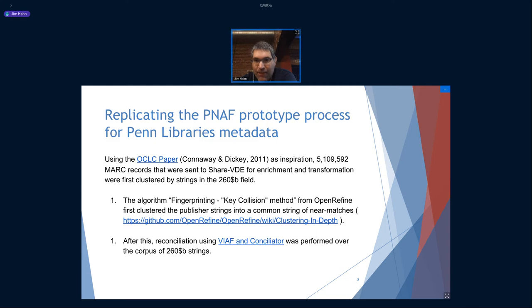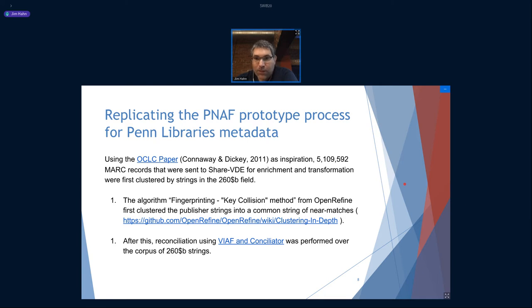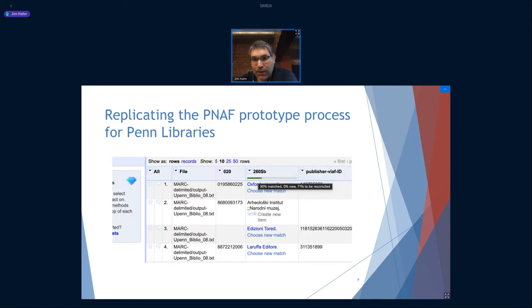Their findings were really interesting, so I wanted to replicate them with some of the data that Penn was sending to ShareVDE. We're sending about 5 million records, with more coming. I used OpenRefine to do a fingerprinting key collision method for clustering publisher strings. After that, I did reconciliation for VIF entity IDs — a way to more unambiguously identify publishers. I was able to get about 30% in a semi-automated fashion.